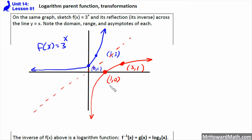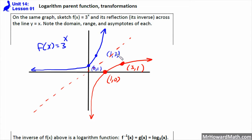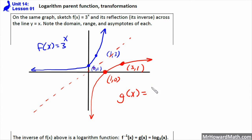When you reflect across the line y equals x, those are inverse functions. As far as the ordered pairs go, the x's and y's just switch. So my y was 1, now my x is 1. My x was 0, now my y is 0. The y coordinate was 3, now the x coordinate is 3. So the x's and y's are just switching. This graph, the one in red, would be g of x equals log base 3 of x. Logarithms and exponentials are inverses of one another — that's how they relate.